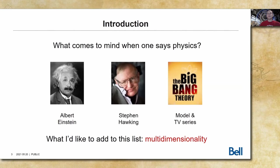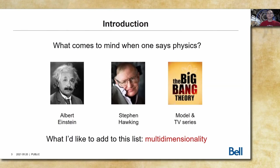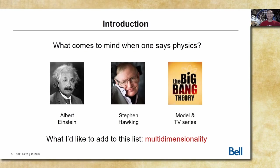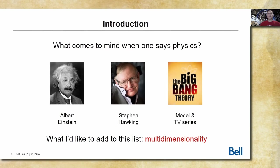I have a physics background. And when somebody mentions physics, what probably comes to mind is Albert Einstein, Stephen Hawking, the Big Bang Theory. What I'd like to add to this list is multidimensionality — not only because physics studies systems in multiple dimensions, but also because physicists themselves are quite multidimensional.